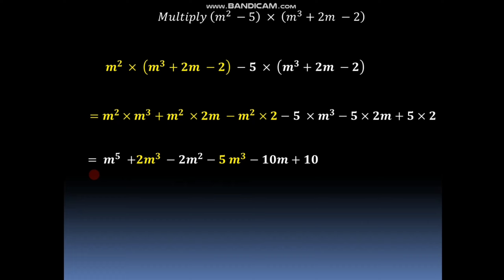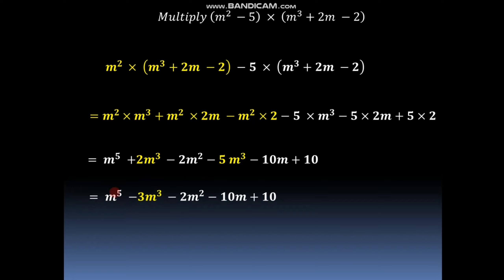Here we have to add or subtract the like terms. m raised to 5 is a single term so we take it as is. Then 2m cube and minus 5m cube are like terms, and adding them gives minus 3m cube. Bringing down minus 2m square as it is, then minus 10m and plus 10. So the final result is m raised to 5 minus 3m cube minus 2m square minus 10m plus 10. This is the polynomial we get after multiplying m square minus 5 and m cube plus 2m minus 2.